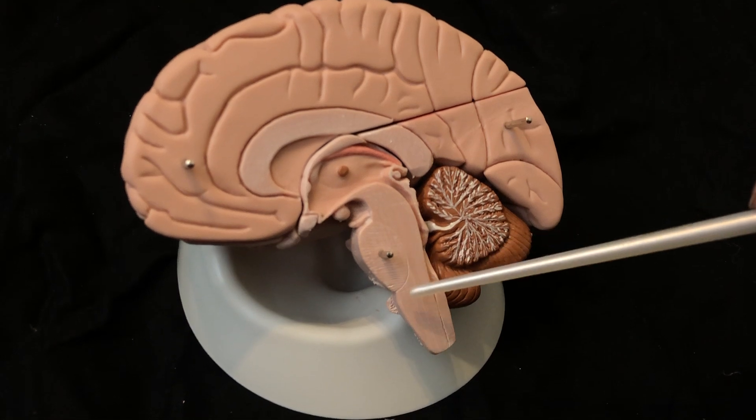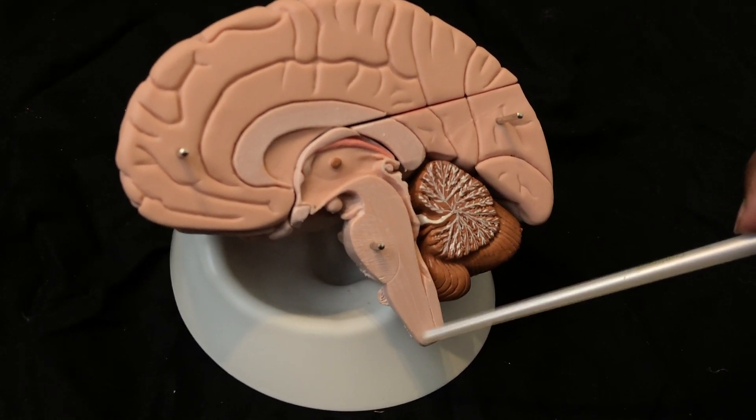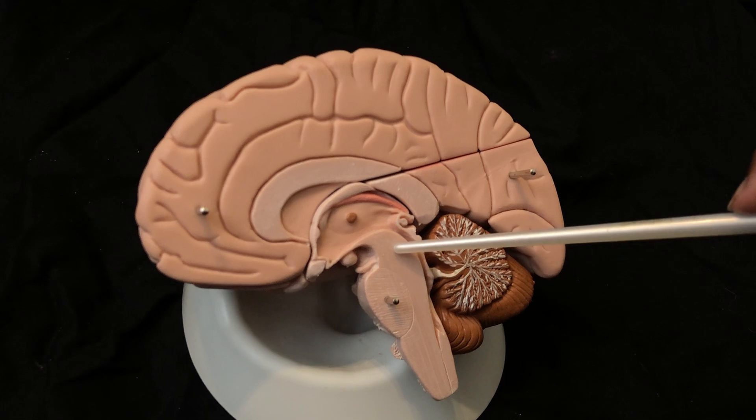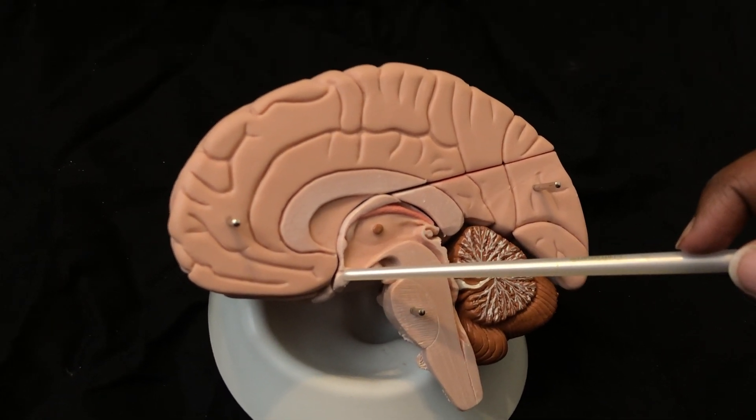This is the pons. This is the medulla oblongata. This is the brainstem. Right here, this is the cerebral peduncles. This is the optic chiasm.